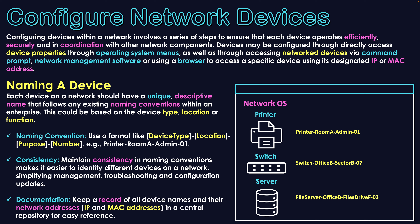A naming convention could be: device type listed first, then a hyphen, its location in the enterprise, then a hyphen, its purpose, then a hyphen, and then a number if there are multiple of that device in that area. For example: printer-roomA-admin-1 is the name of that printer, and a second printer in that room would be printer-roomA-admin-2.